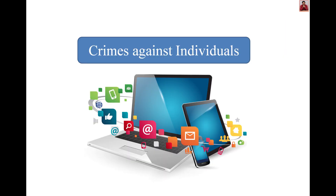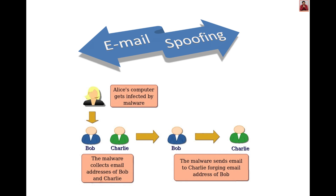First, crimes against individuals — email spoofing. For example, consider three persons connected in a network: Alice, Bob, and Charlie. If Alice's computer gets infected by malware, the malware collects email addresses of Bob and Charlie. The malware then sends an email to Charlie forging the email address of Bob. This is the formation of email messages by impersonating a correspondent's identity, with the origin different from where it actually originates.